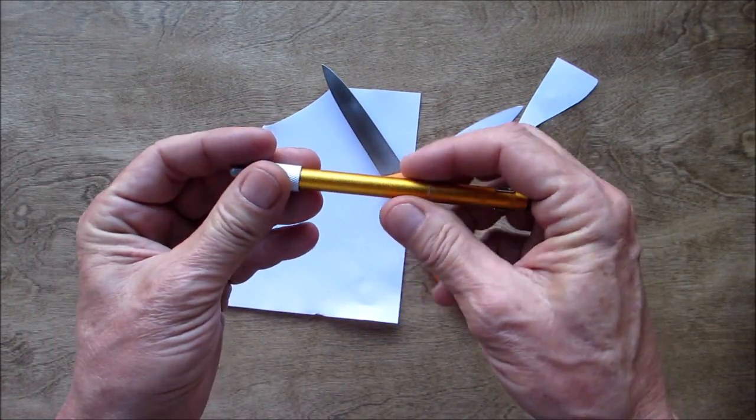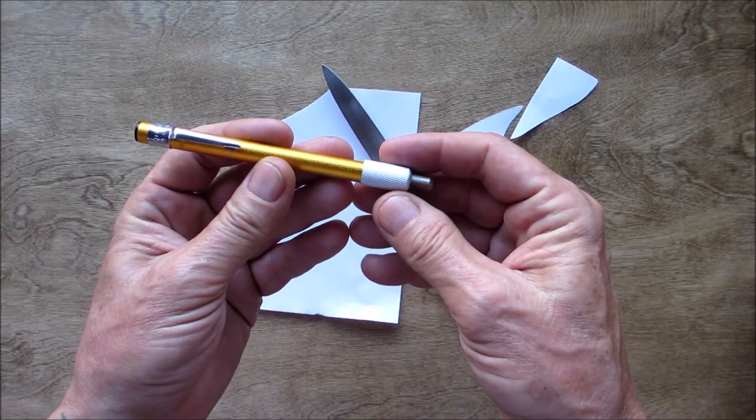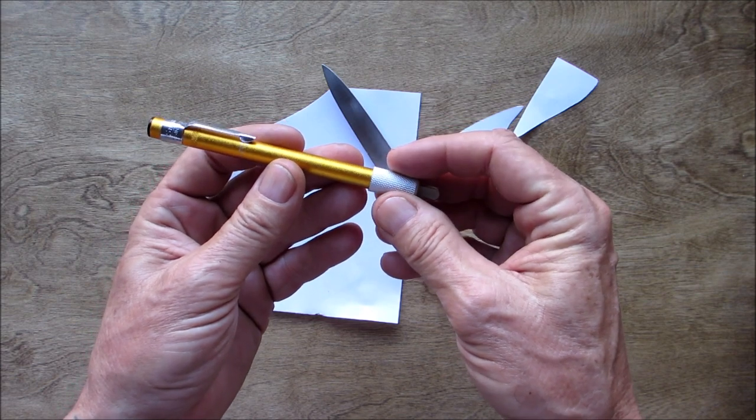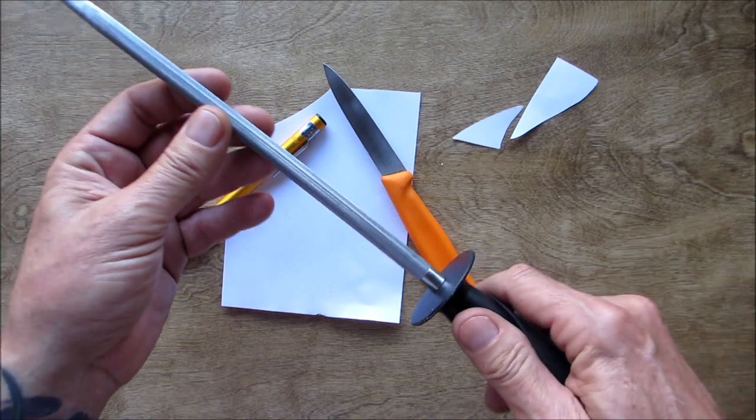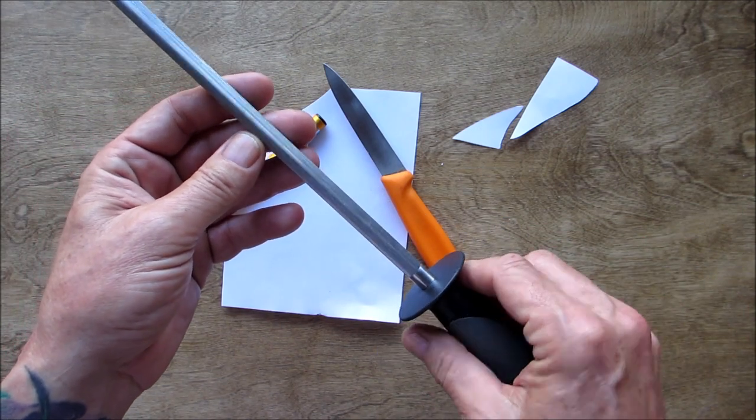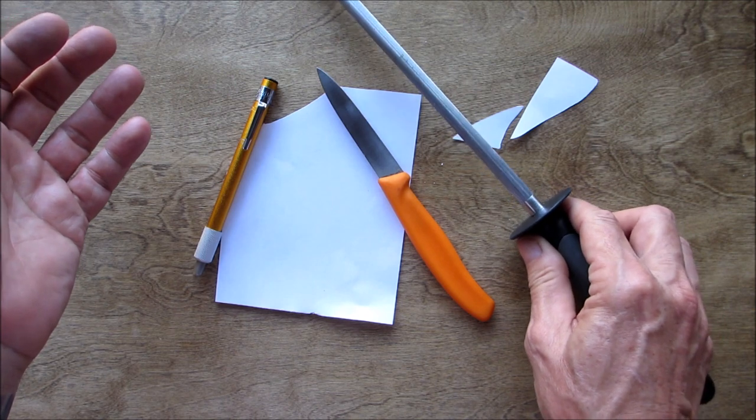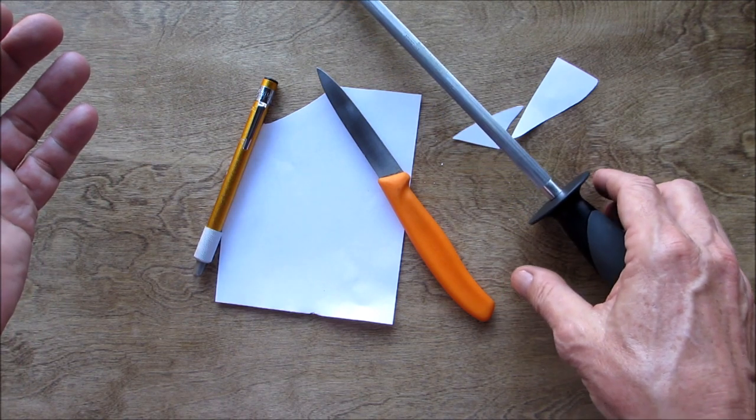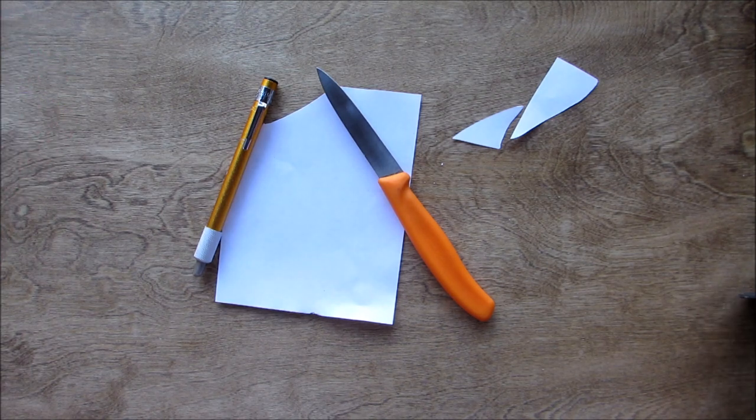So here it is. I definitely recommend this. It's lightweight - you throw this in your pack, your pocket, your kitchen drawer. It's definitely worth the money. I like it better than a steel. It's more compact and I think it does a better job. So there you go: Smith's retractable diamond sharpener. Go get yourself one.